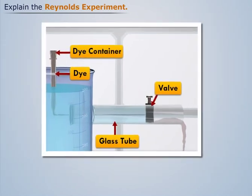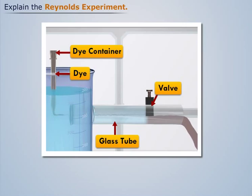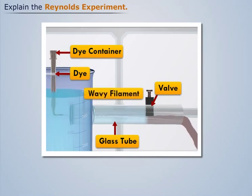When we open the regulating valve a little more, the water flows out of the glass tube at an increased speed and the liquid dye flows in the water in the form of a wavy filament, characterizing transition flow.